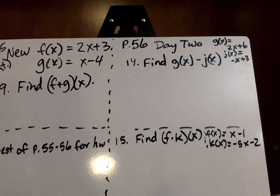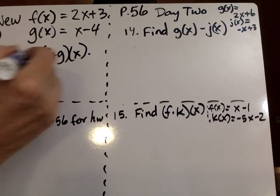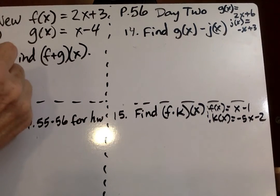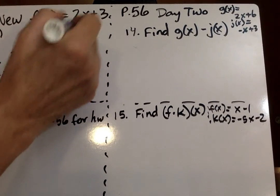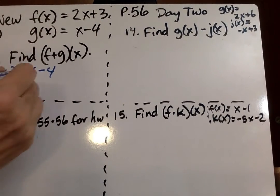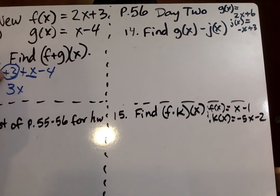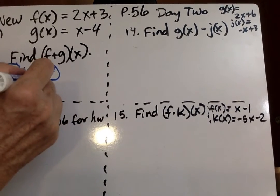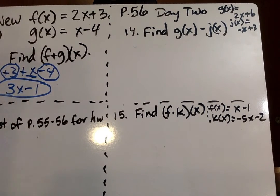Actually, I guess I do one more on page 55 with the new f of x. And it says find f plus g of x. All we're doing is adding 2x plus 3 plus x minus 4. So f plus g. I combine 2x and 1x and I get 3x. And plus 3, always circle the sign in front, and minus 4. Easy peasy.